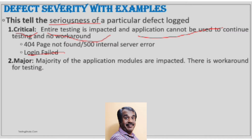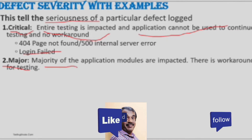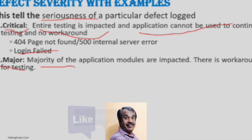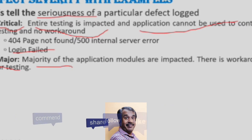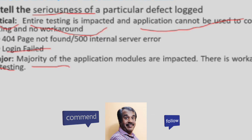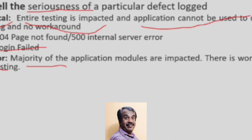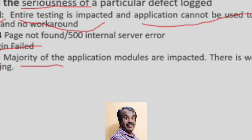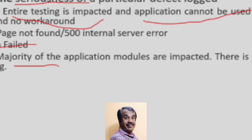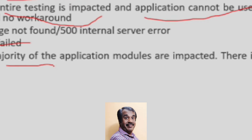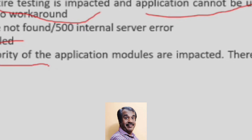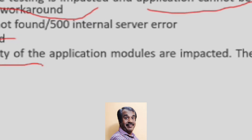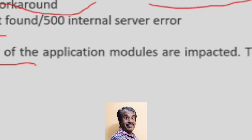The second severity level is Major. We log defects as major when the majority of application modules are getting impacted, but there is a workaround for internal testing. However, it is a problem for the business or client, so these major defects must be fixed before signing off on a release.